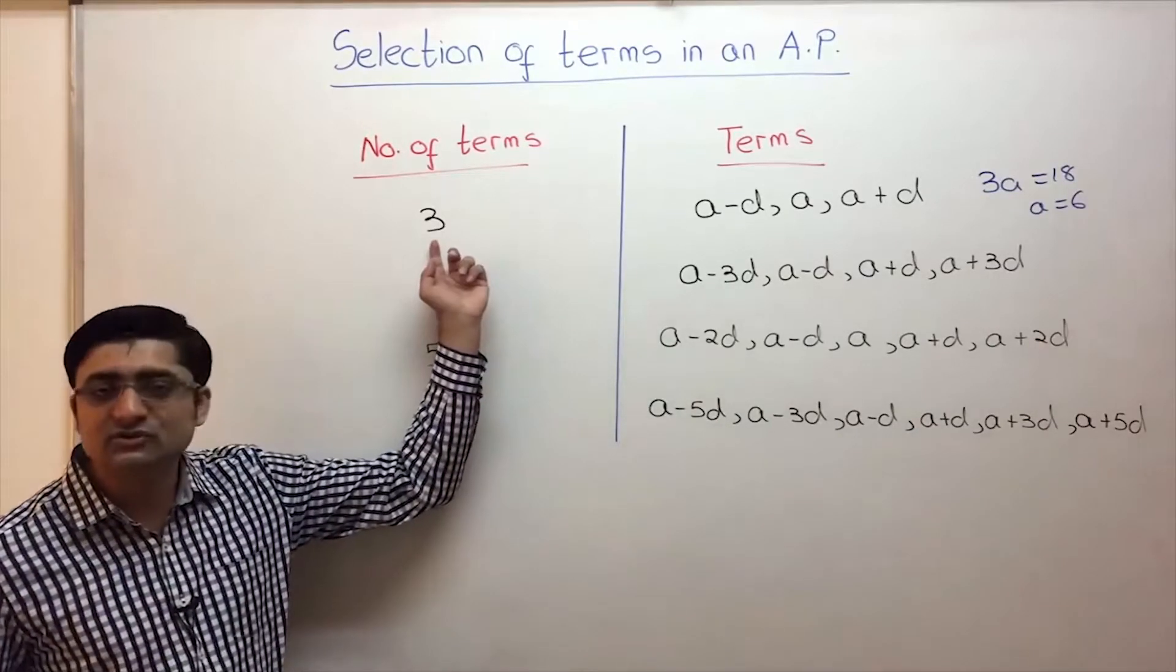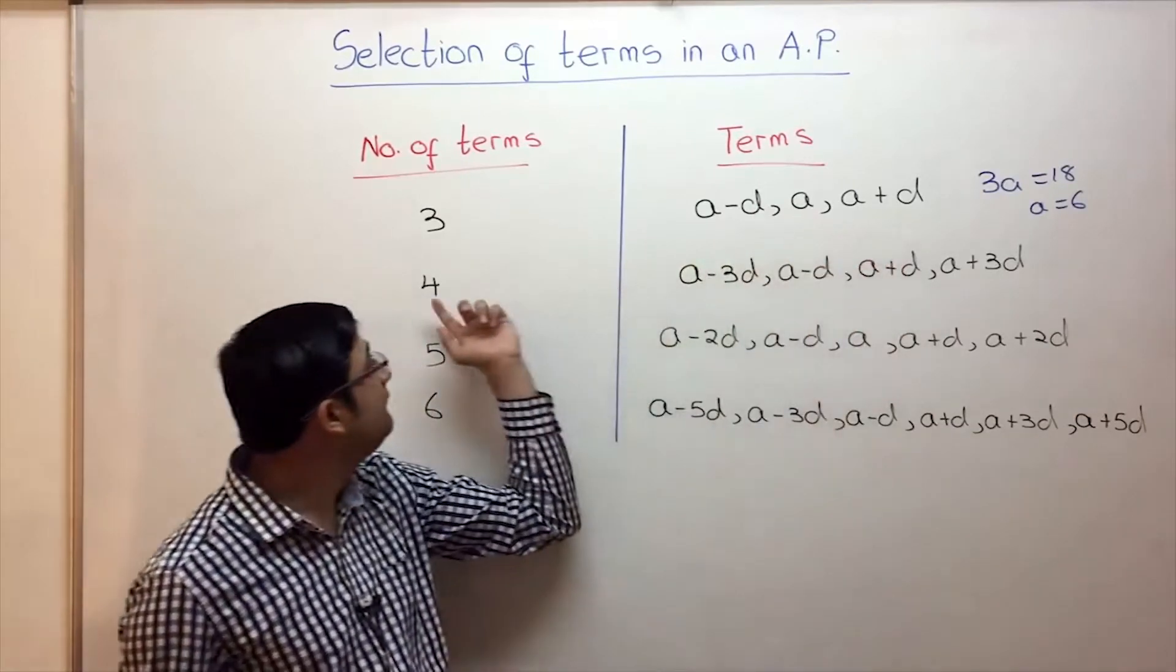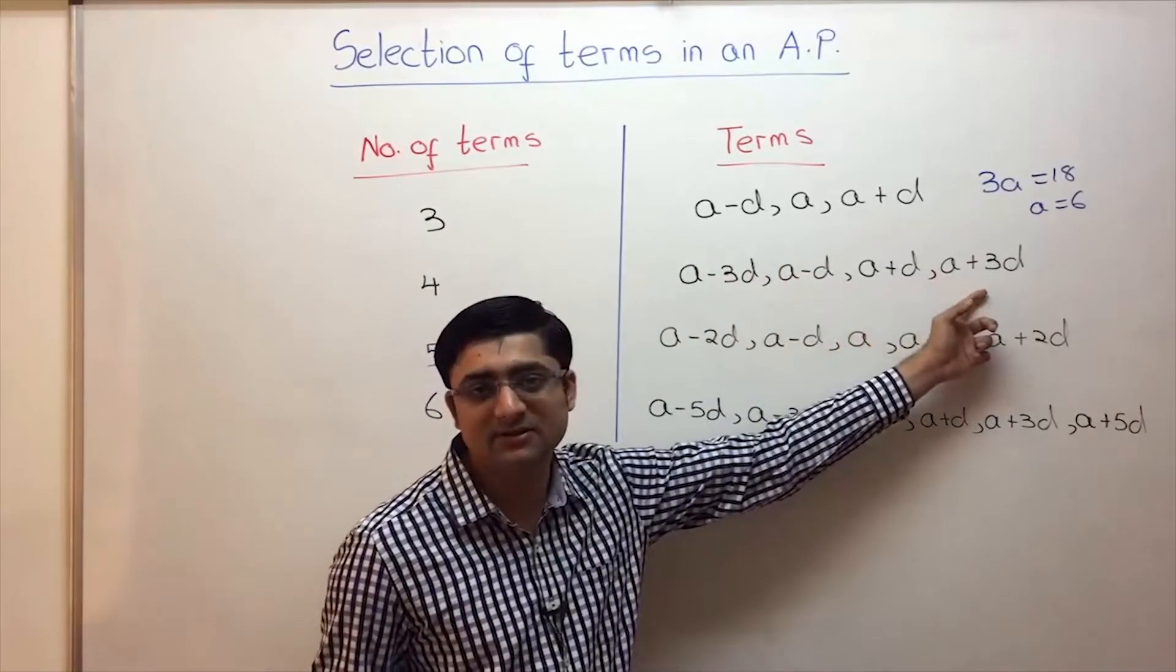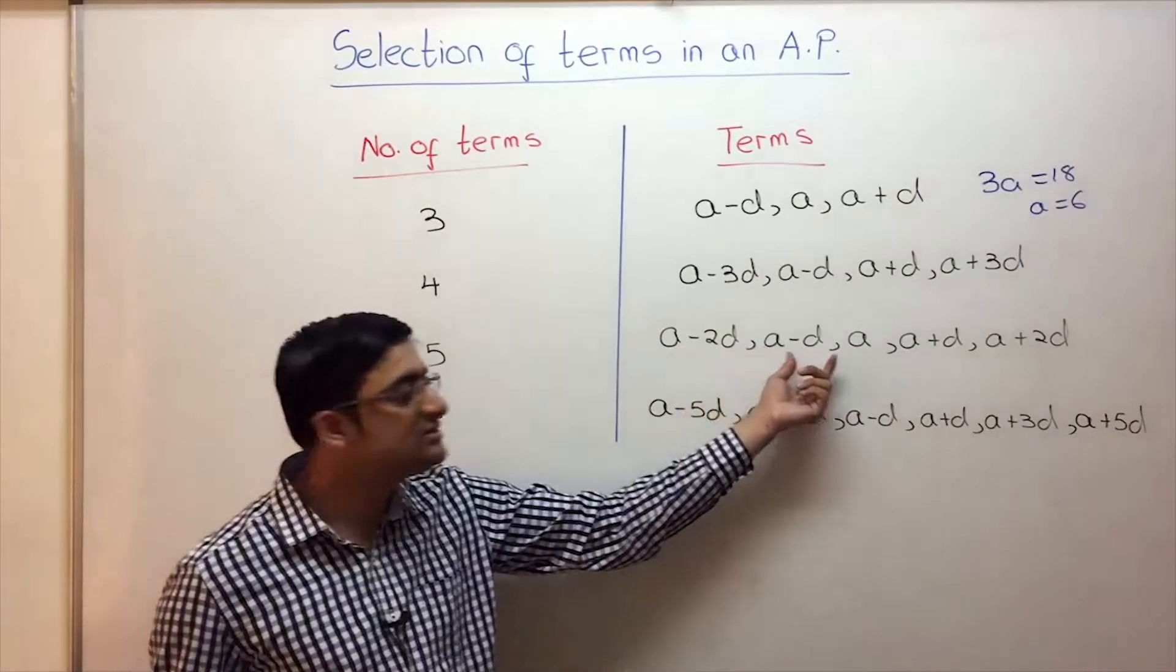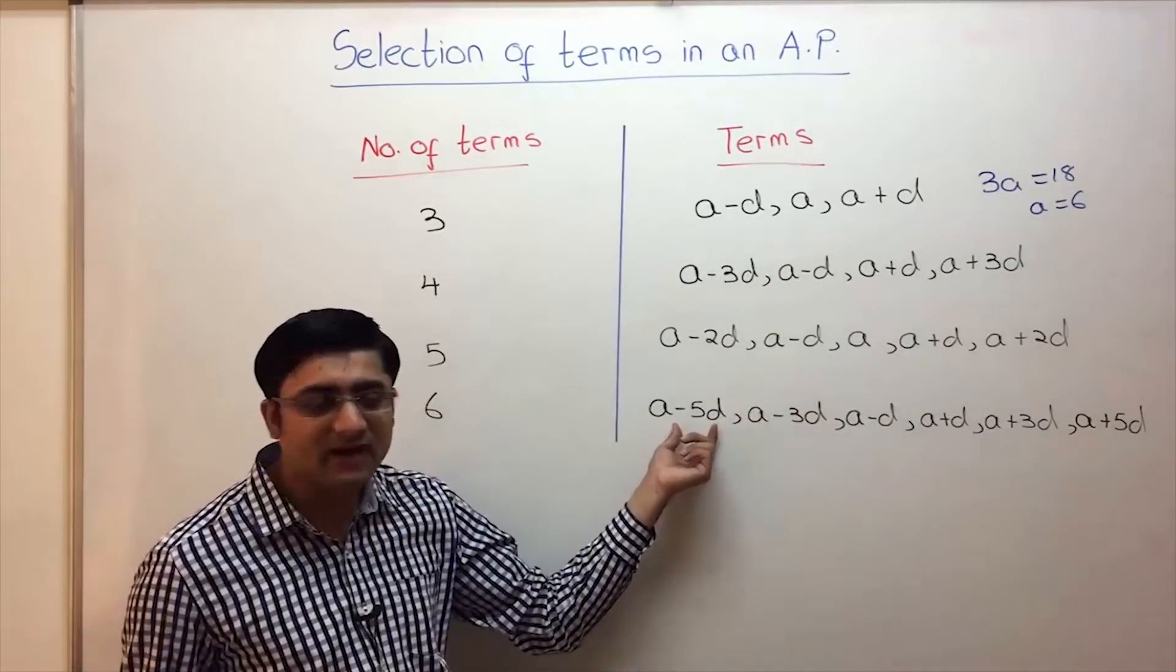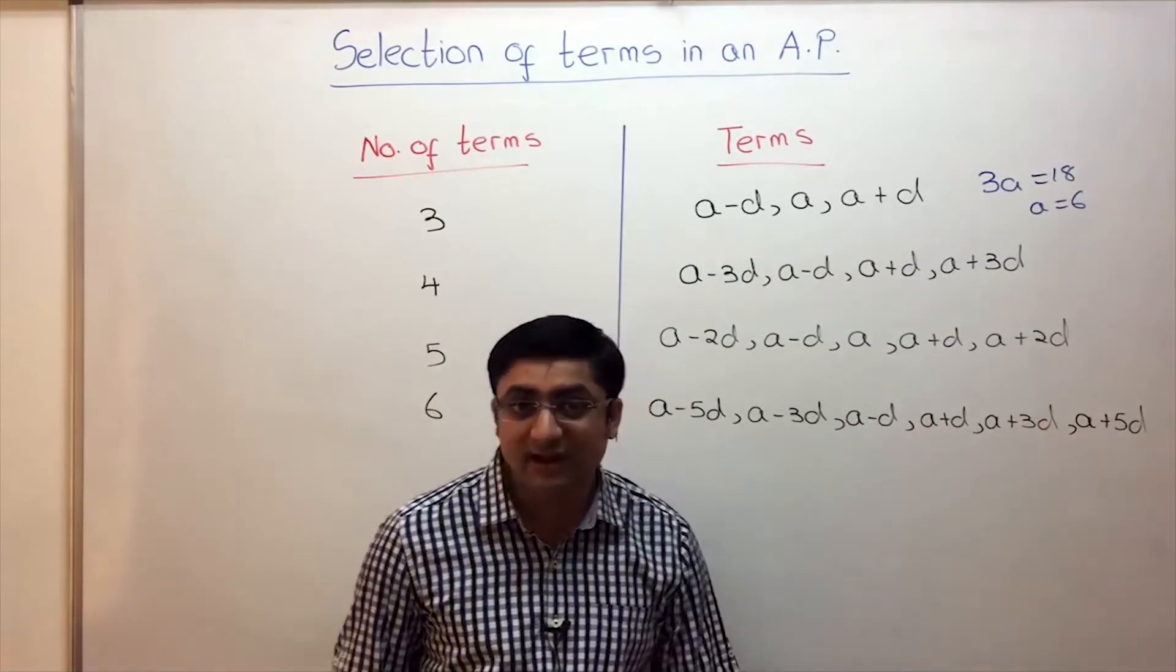So I repeat: whenever you have to choose three terms in an AP, A minus D, A, A plus D. Four terms in an AP: A minus 3D, A minus D, A plus D, A plus 3D. Five terms in an AP: A minus 2D, A minus D, A, A plus D, A plus 2D. Six terms: A minus 5D, A minus 3D, A minus D, A plus D, A plus 3D, A plus 5D.